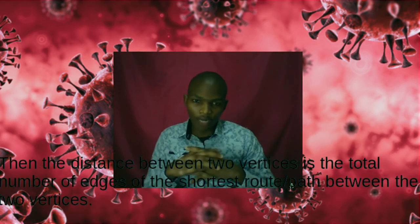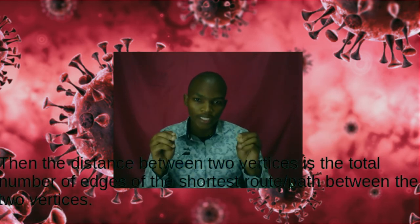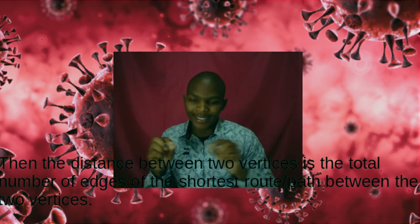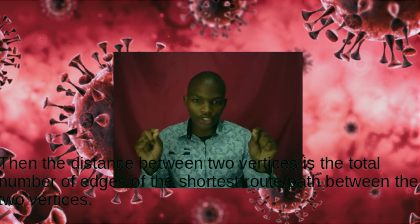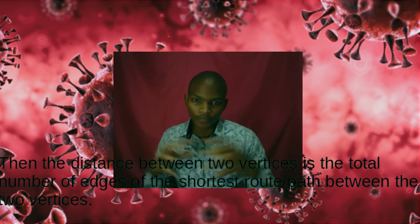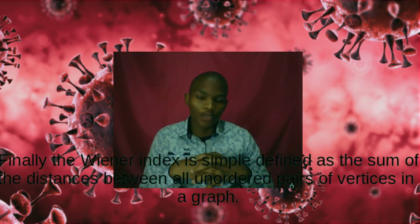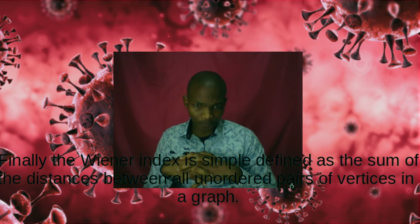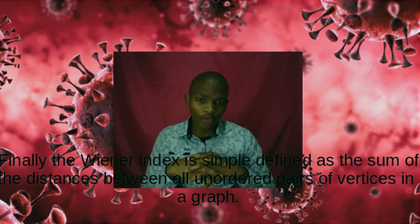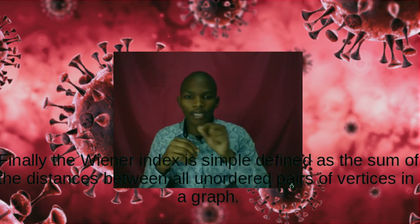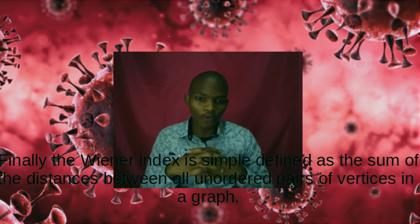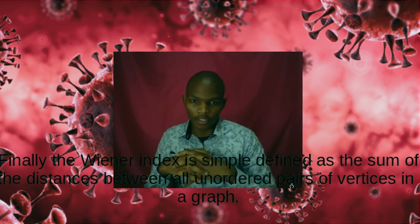Now, the distance between two vertices is simply the number of edges of the shortest route between the two vertices. And finally, the Wiener index is simply the sum of the distances between all unordered pairs of the vertices in that particular graph.